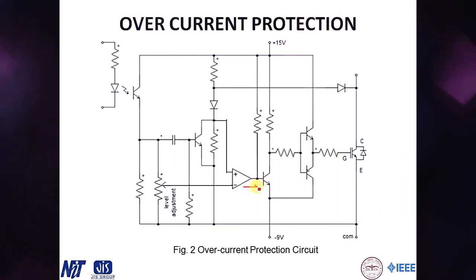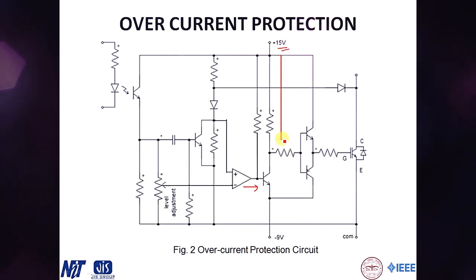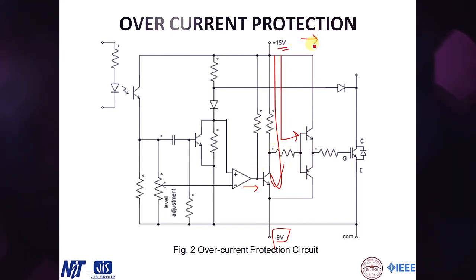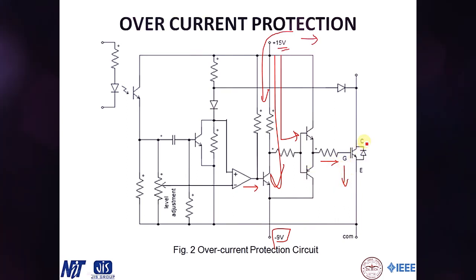This high output from the comparator is applied to the gate terminal of a transistor, driving it into conduction. When this transistor conducts, it provides a low-impedance path — since there is a negative potential on one side and plus 15V on the other, forming a 24V line. All the gate current that was flowing to the IGBT gate terminal now flows through this path instead, causing the gate voltage to drop.